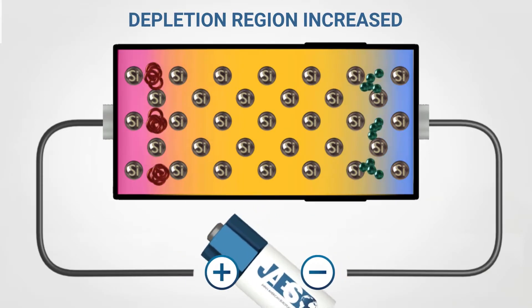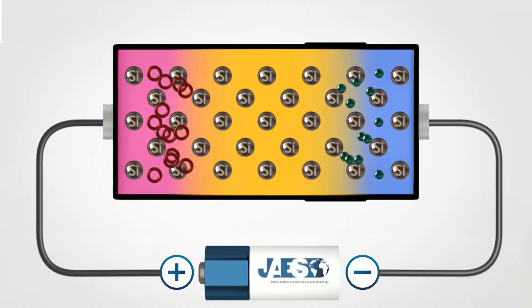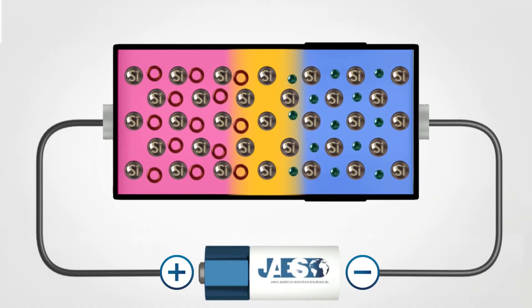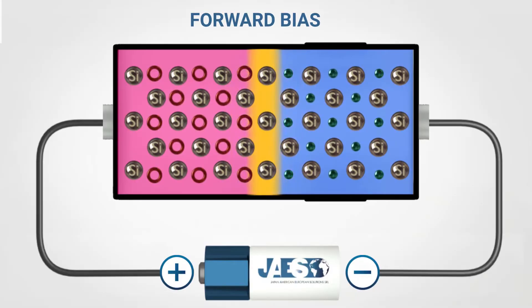If we try instead to connect the positive pole of the battery with the P-side of the diode, the situation changes completely. The diode will be in a forward biased condition and the depletion region will shrink.